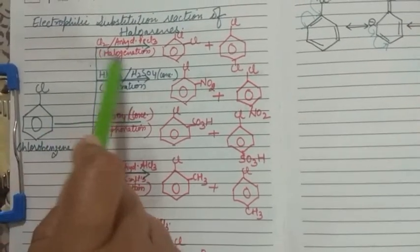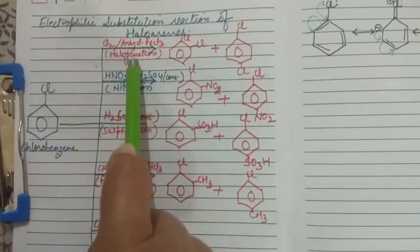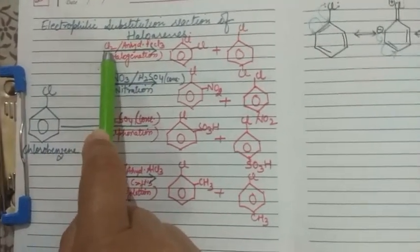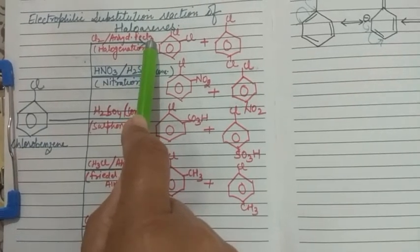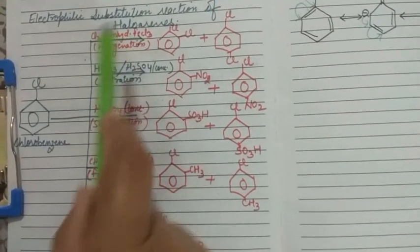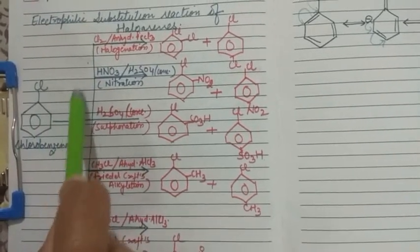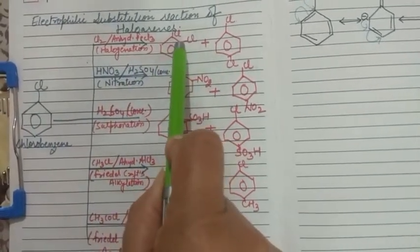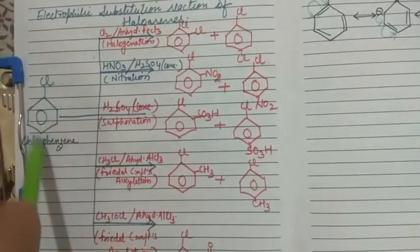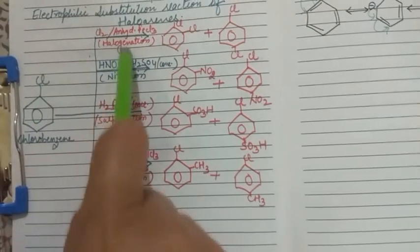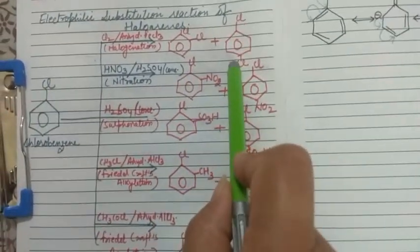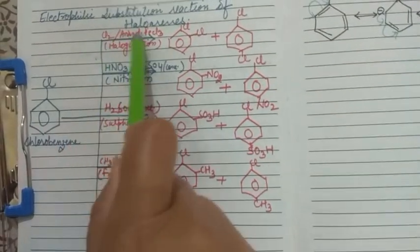The first reaction is halogenation. Here the halogen we have taken is chlorine. Chlorine in the presence of anhydrous FeCl₃ will undergo halogenation. In chlorobenzene, Cl will go to the ortho position and to the para position. The incoming halogen group will add to the ortho position or para position. This is the first reaction of haloarenes.